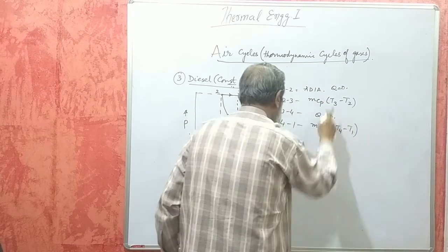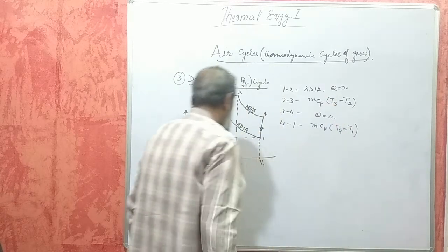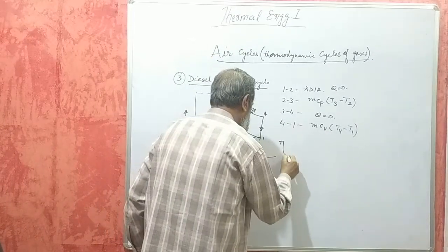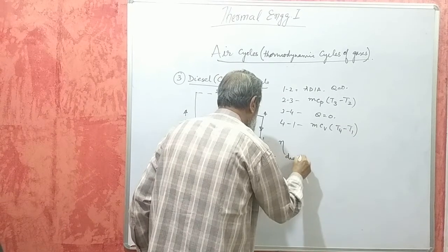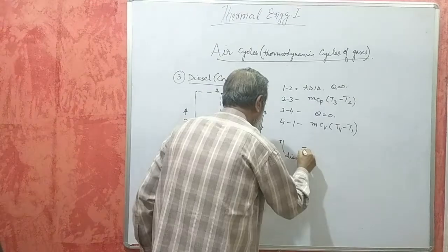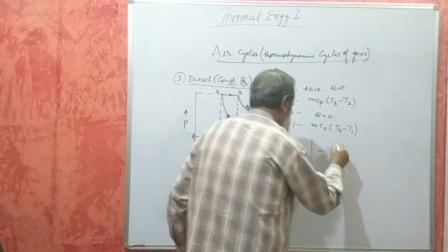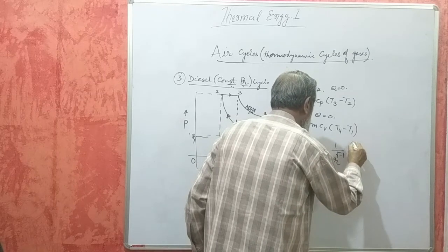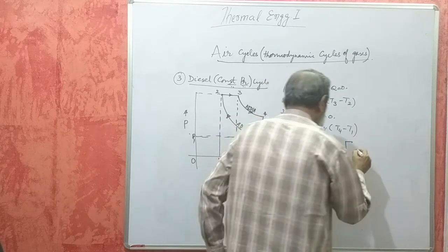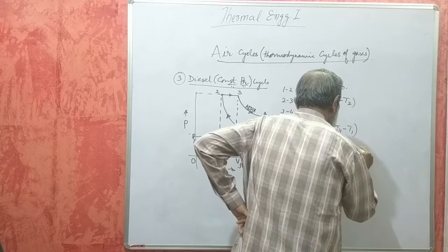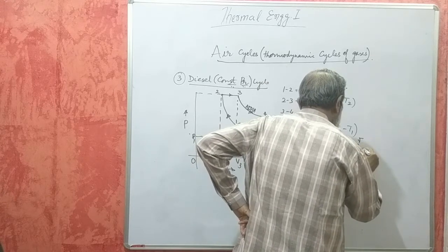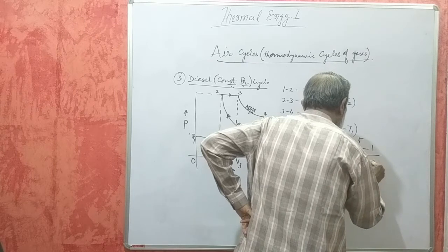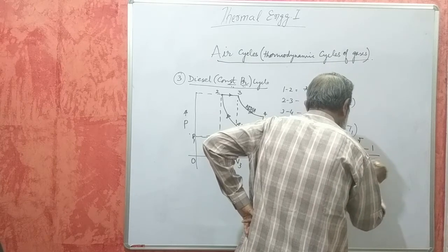Heat absorbed minus heat rejected, divided by heat absorbed, gives the efficiency of the cycle. The efficiency of the Diesel cycle simplifies to: 1 minus 1 over R to the power of (gamma minus 1), multiplied by (rho to the power of gamma minus 1) divided by (gamma into rho minus 1).